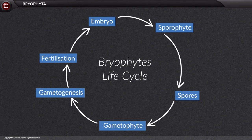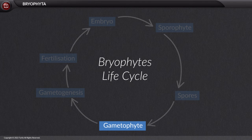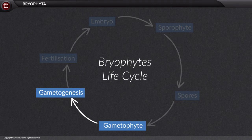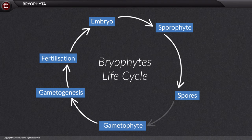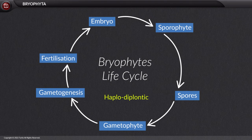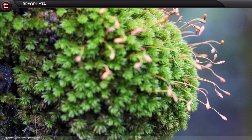The gametophytic body performs gametogenesis to produce the male and female gametes, which are haploid structures. The haploid gametes fuse to form a diploid embryo that develops into a diploid sporophyte. The sporophyte generates haploid spores that develop into a new gametophytic body. Since the haploid and diploid structures are equally shared in the life cycle, it is also called a haplodiplontic life cycle.